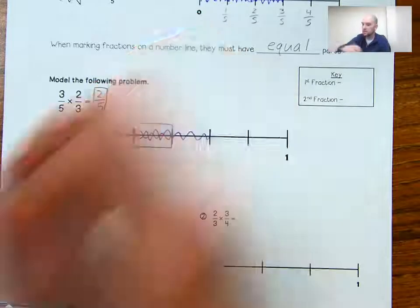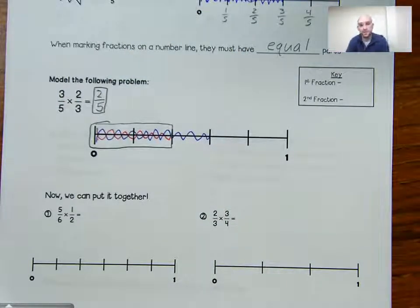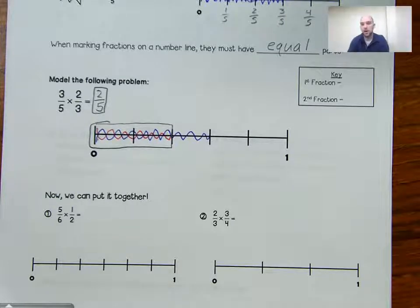That's the same as saying two-thirds of three-fifths, or three-fifths of two-thirds. That word 'of' is just another way of saying 'times.'